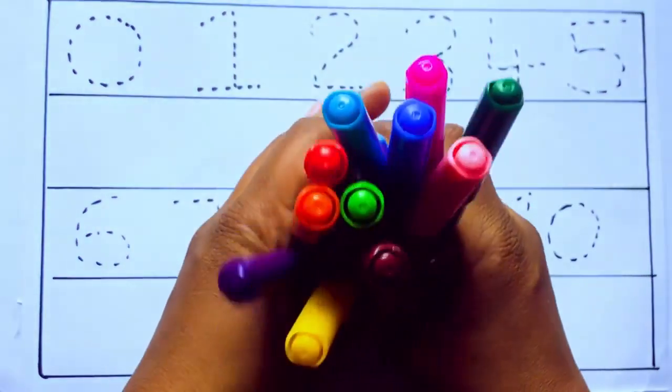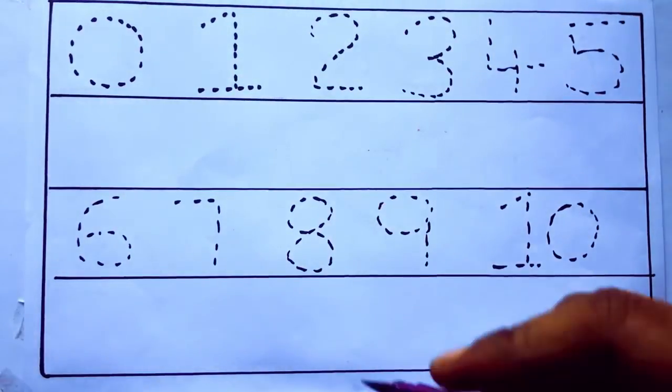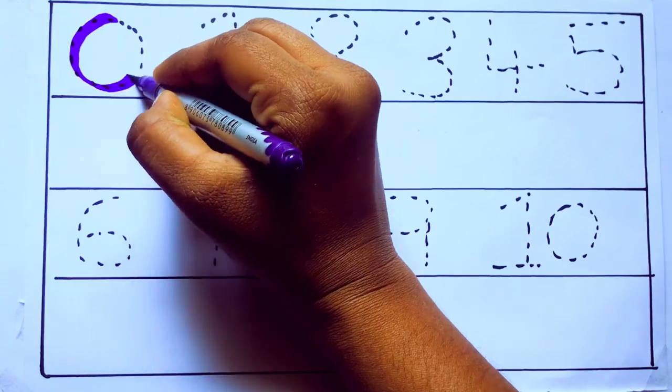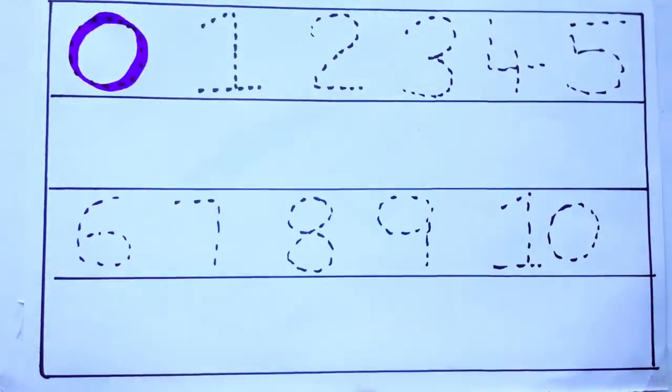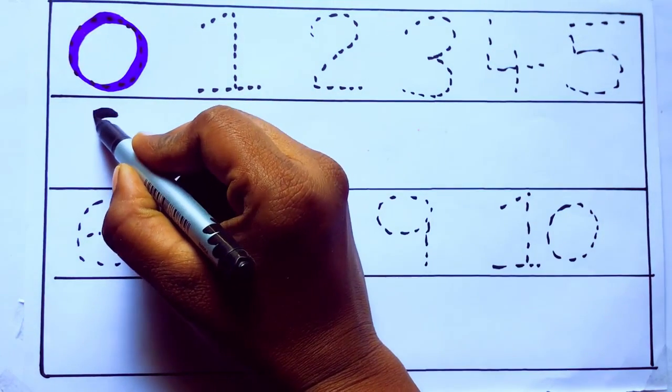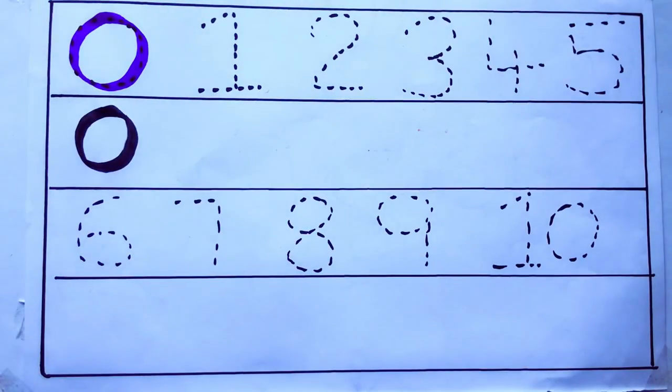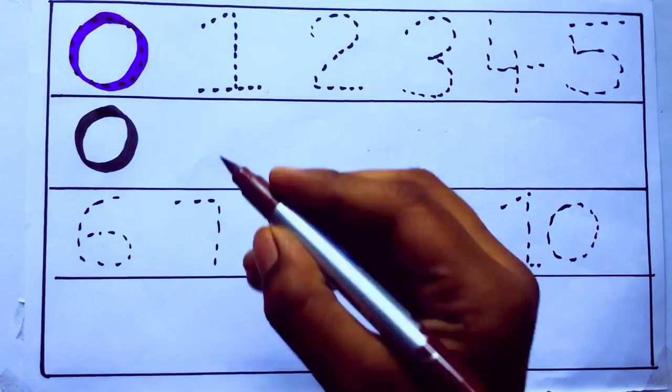And pink color. Let's draw numbers. Violet color 0, Z-E-R-O, 0. Brown color.